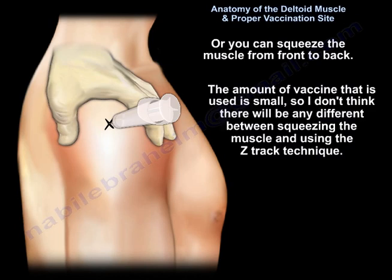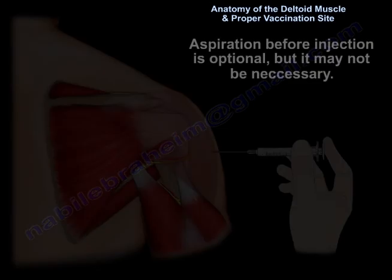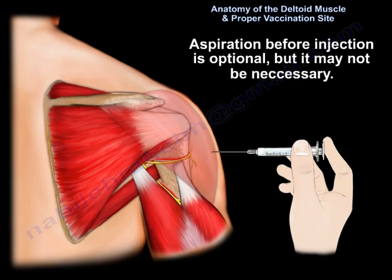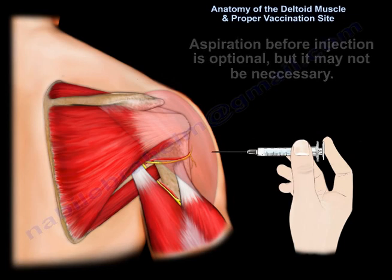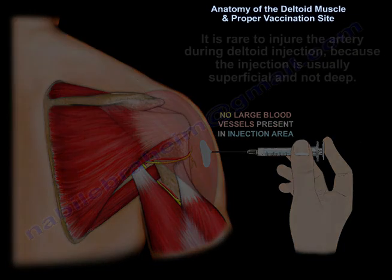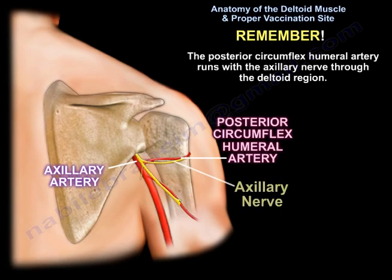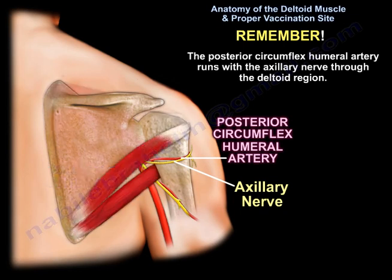Because the amount of vaccine is so small, there is likely little difference between squeezing the muscle and the Z-Track technique. It is preferable to wear gloves. Aspiration before injection is optional and may not be necessary. It is rare to injure the artery during deltoid injection because the injection is usually superficial and not deep. Note that the posterior circumflex humeral artery runs with the axillary nerve through the deltoid region.